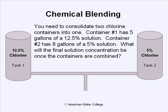The question reads: You need to consolidate two chlorine containers into one. Container number one has five gallons of a 12.5% solution. Container number two has eight gallons of a 5% solution. What will the final solution concentration be once the containers are combined?